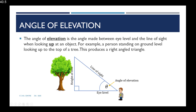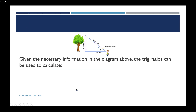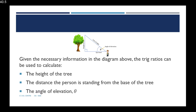The third side of the triangle is the height of the tree. Given the necessary information in the diagram, the trig ratios can be used to calculate the height of the tree if we are given the distance the person is standing from the base of the tree or the angle of elevation, which is the value of theta.